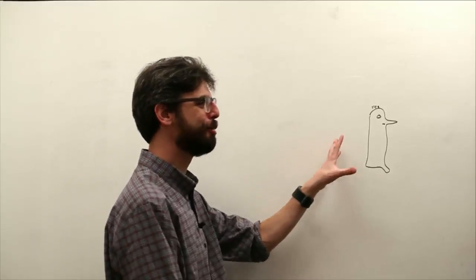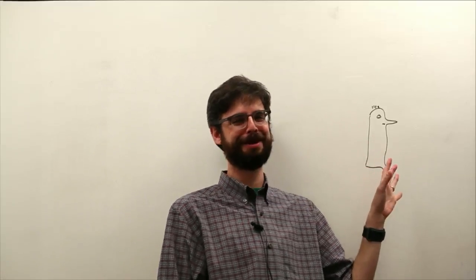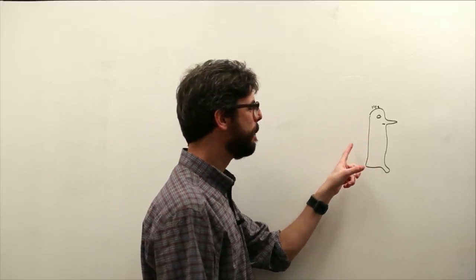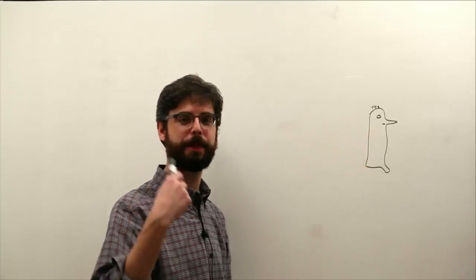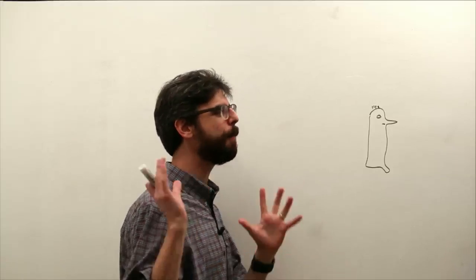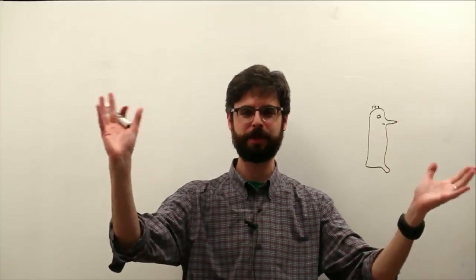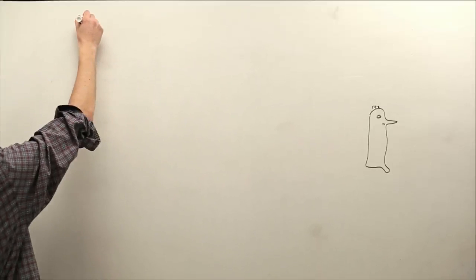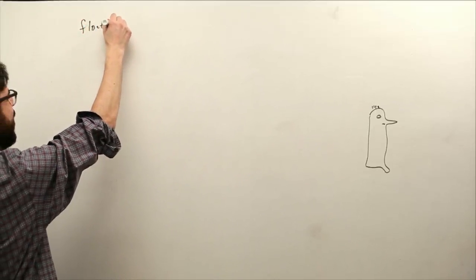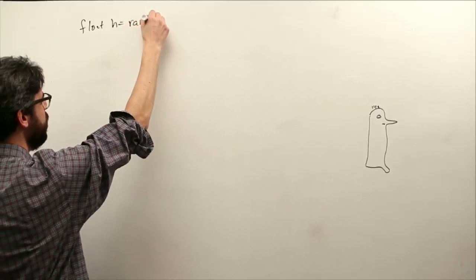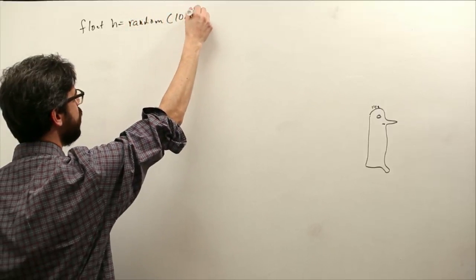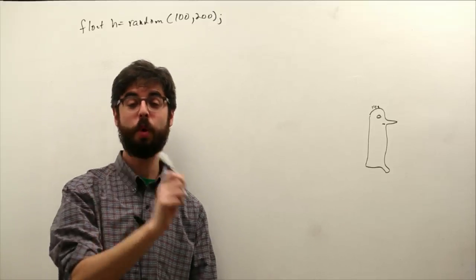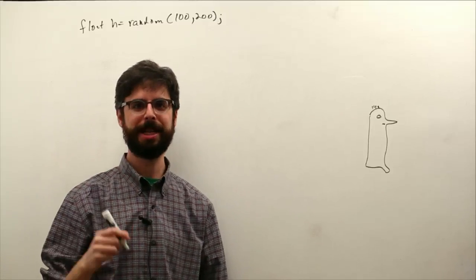So Gaussian distributions of random numbers. Before I started this video, I drew this little meerkat. I only spent about 45 minutes on it, and I can't draw. So this, I think, is pretty good. But a meerkat scenario came up in a previous video. Let's say we're trying to make a population of meerkats. That's our simulation, and we need heights for them. So we say float h equals random 100 comma 200. I'm picking a random number between 100 and 200. That's going to be my height.